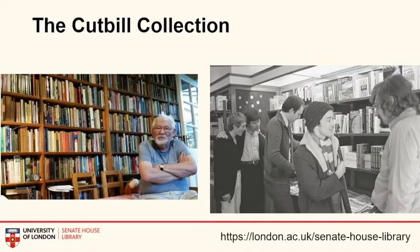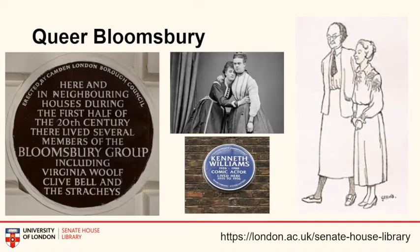I want to introduce this new and exciting collection to you. It's so new, in fact, that it's still uncatalogued. I want to suggest why Senate House Library is such a fitting home for it, and at the same time to locate Senate House Library as an institution within queer Bloomsbury. Bloomsbury can be thought of as a transitional queer space located between London's west and east ends, and Roger Luckhurst has written of Bloomsbury as a kind of liminal space.